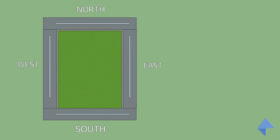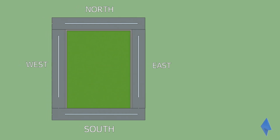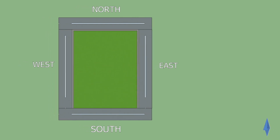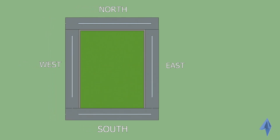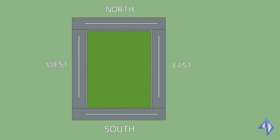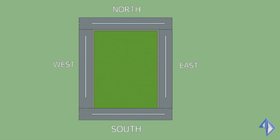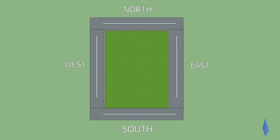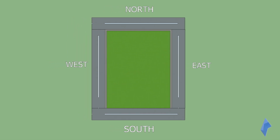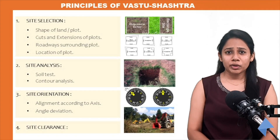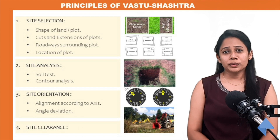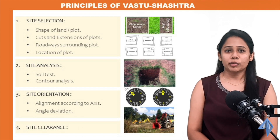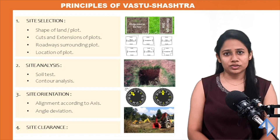And if you have a roadway on all four directions — east, west, north and south — it's very rare but it's a very auspicious kind of plot. It is recommended not to purchase land near public places like hospitals, temples, crematorium, etc.